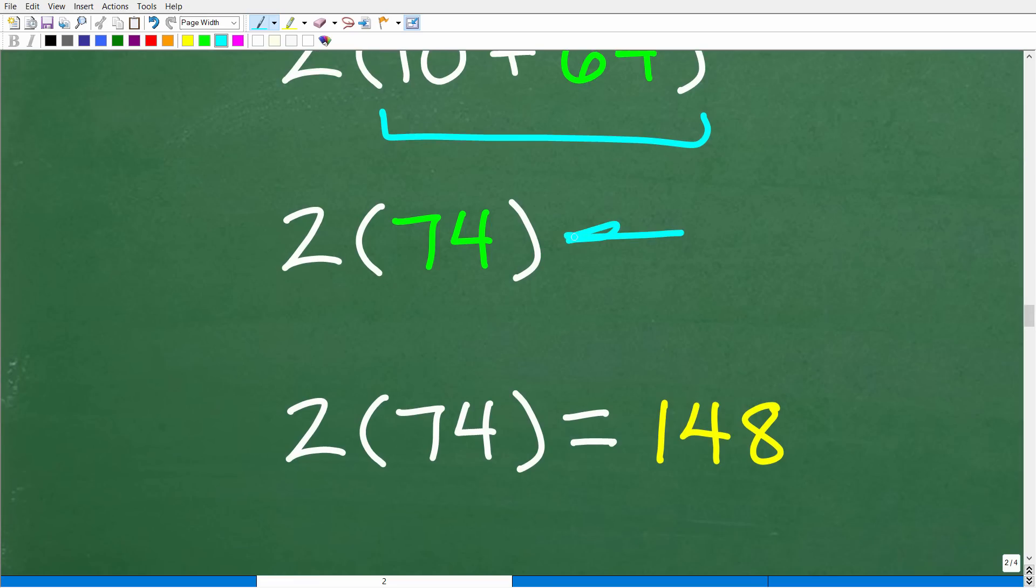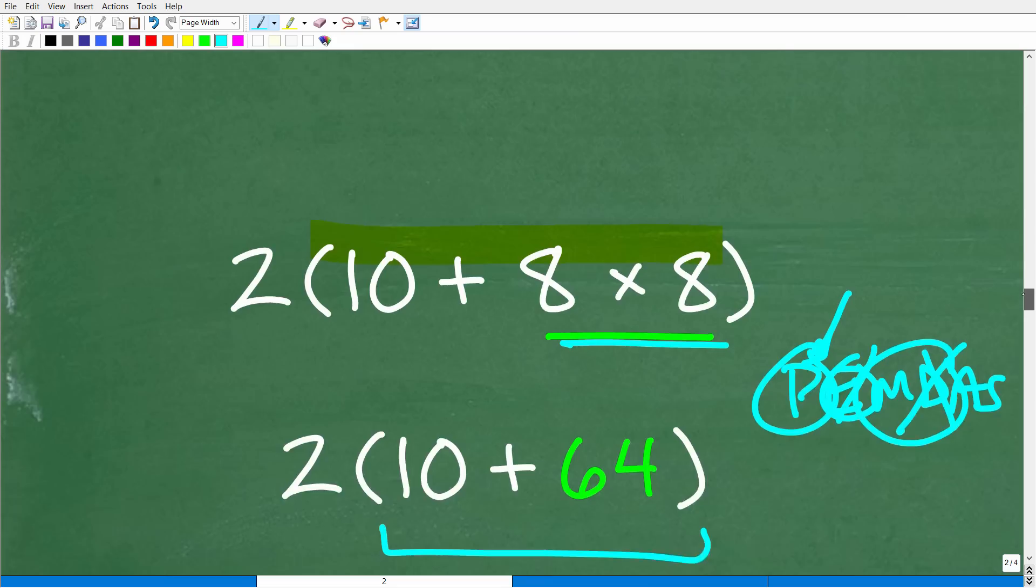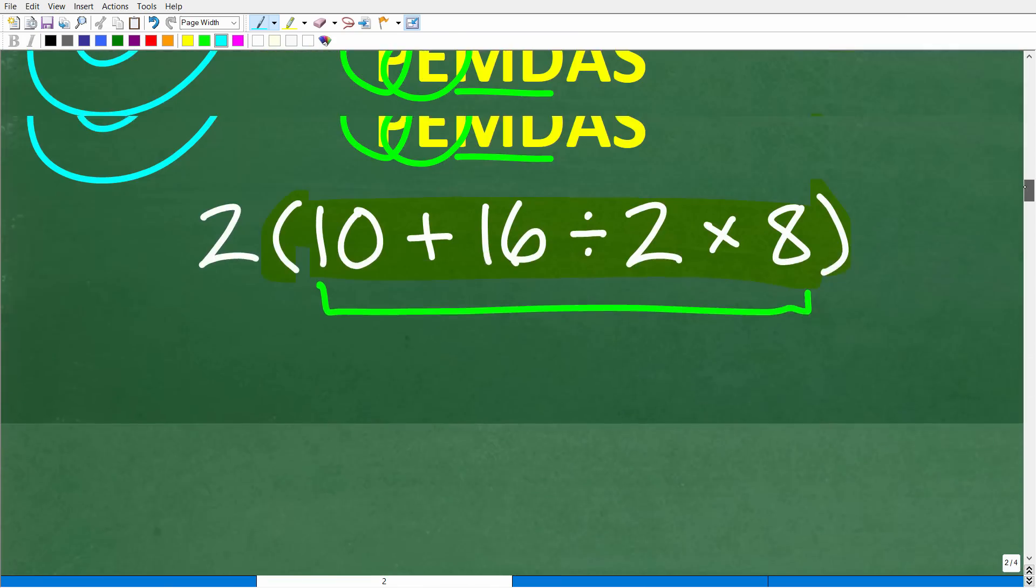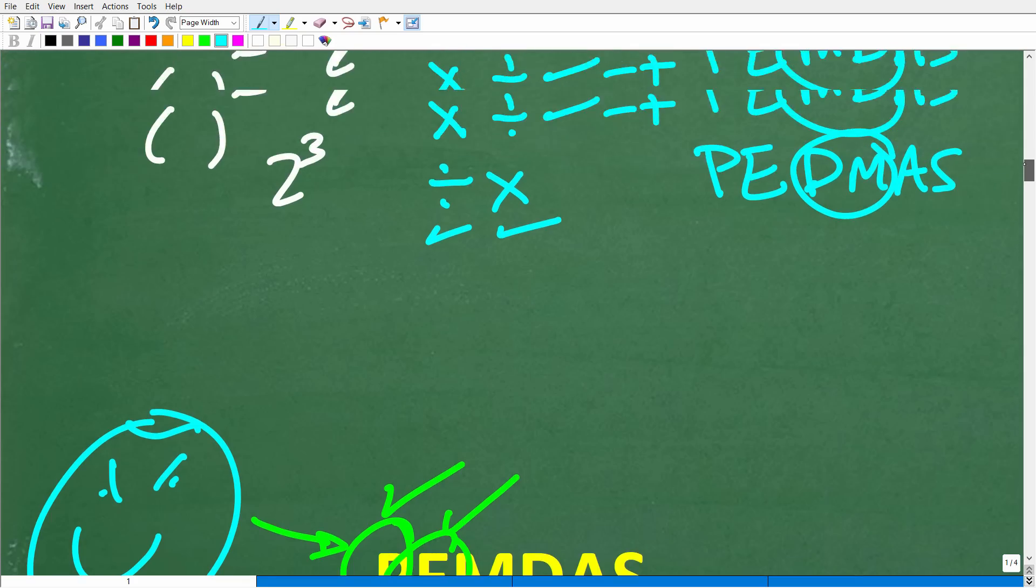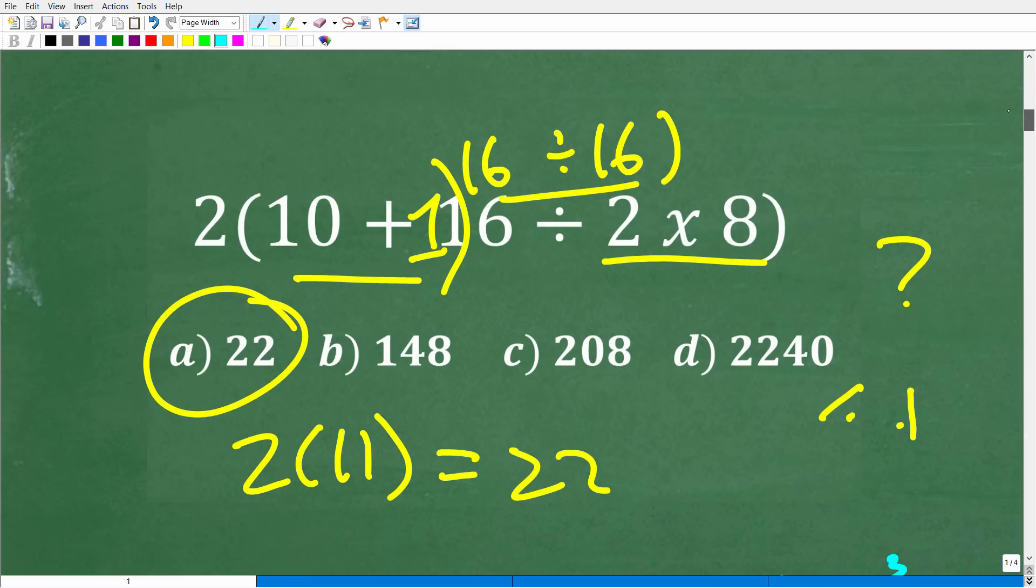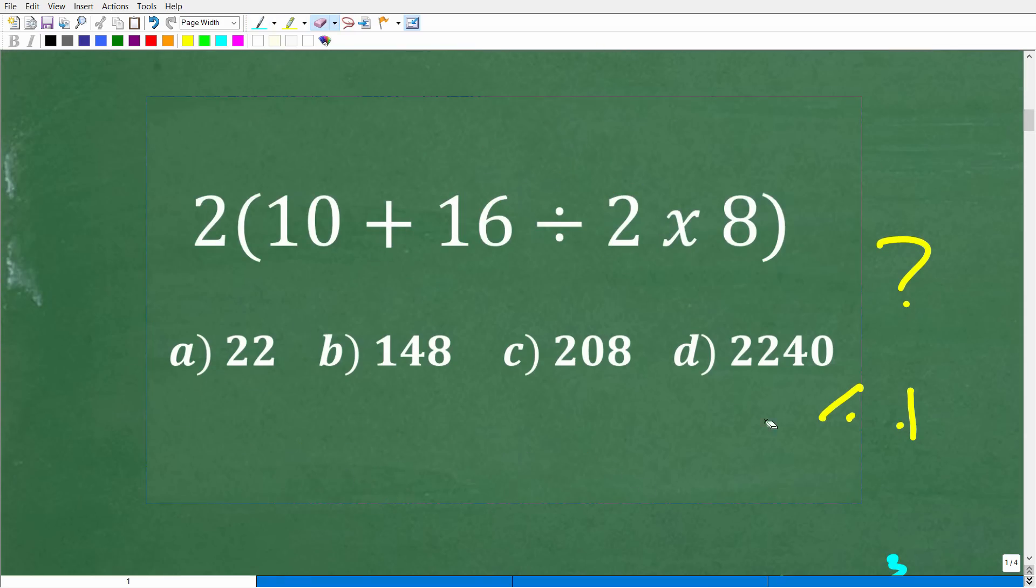And there's some basic multiplication. Two times 74 is 148, which, of course, is the right answer. So again, don't feel bad if you got this problem wrong. Matter of fact, I'm actually happy that you got this problem wrong. Because if you got this problem wrong, that means there was something that you didn't understand about basic mathematics, and hopefully now that is fixed. That's the whole idea behind challenging yourself, checking for understanding.